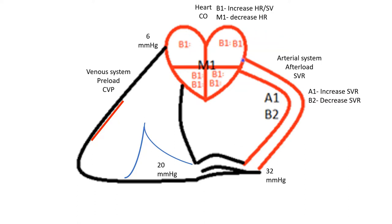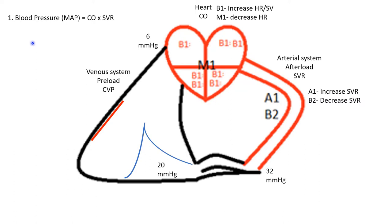Now let's look at how these components interact. There are only three equations you need. First: mean arterial pressure equals cardiac output times systemic vascular resistance. SVR is our degree of arterial constriction, but not the only component of blood pressure — you can have high SVR but if cardiac output is low, you'll have no blood pressure. The body always tries to maintain homeostasis: if SVR decreases, cardiac output will increase to maintain blood pressure.